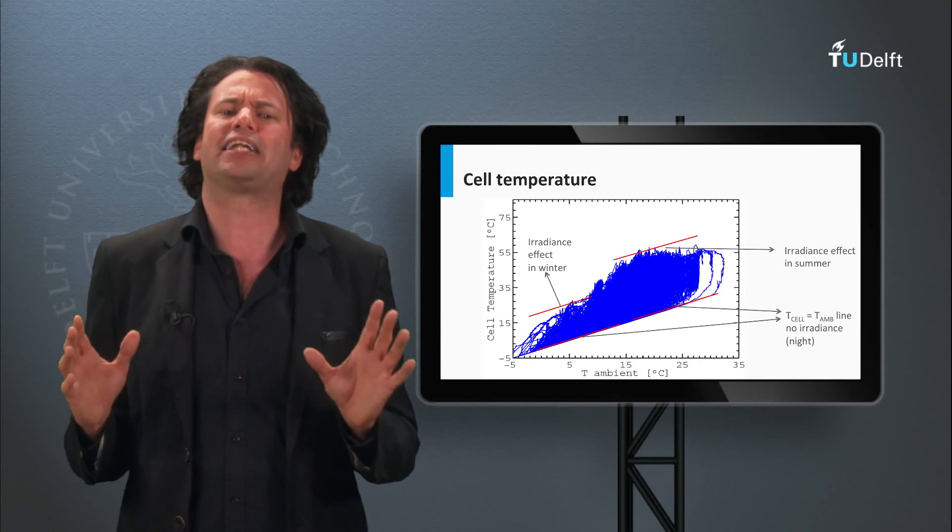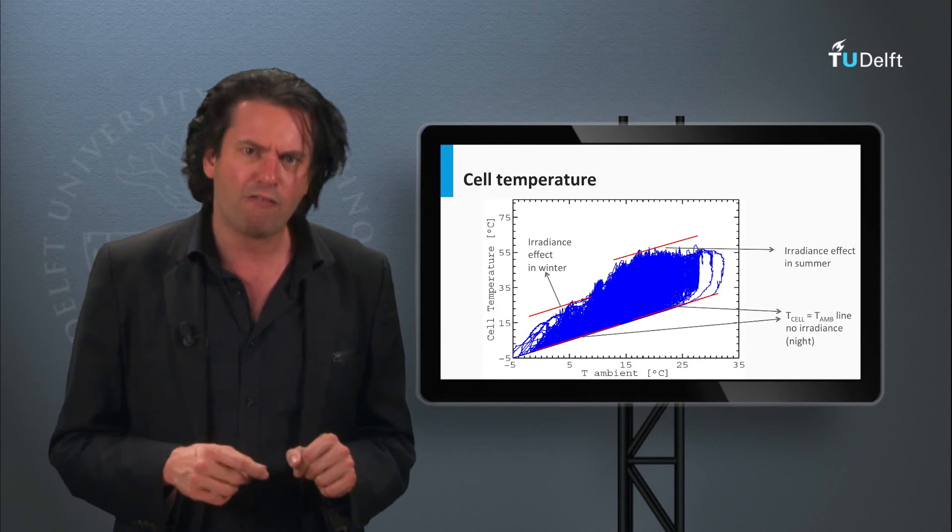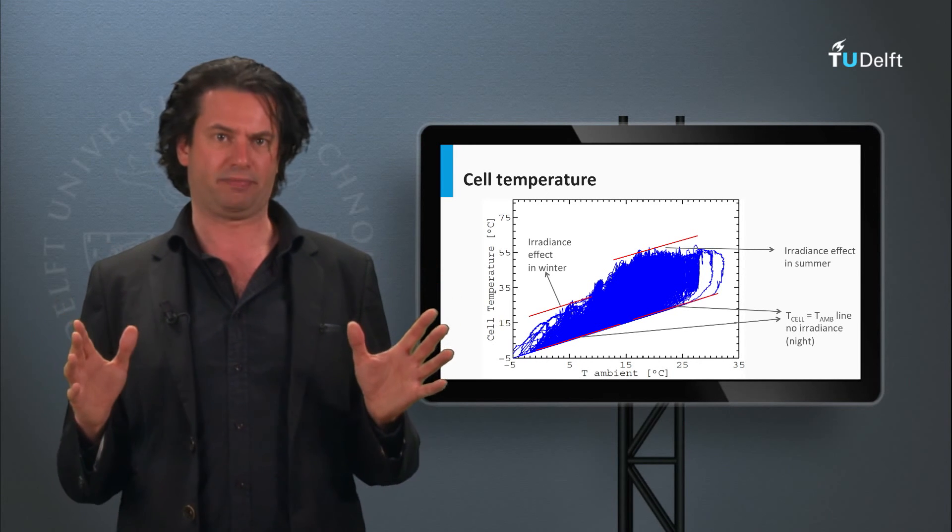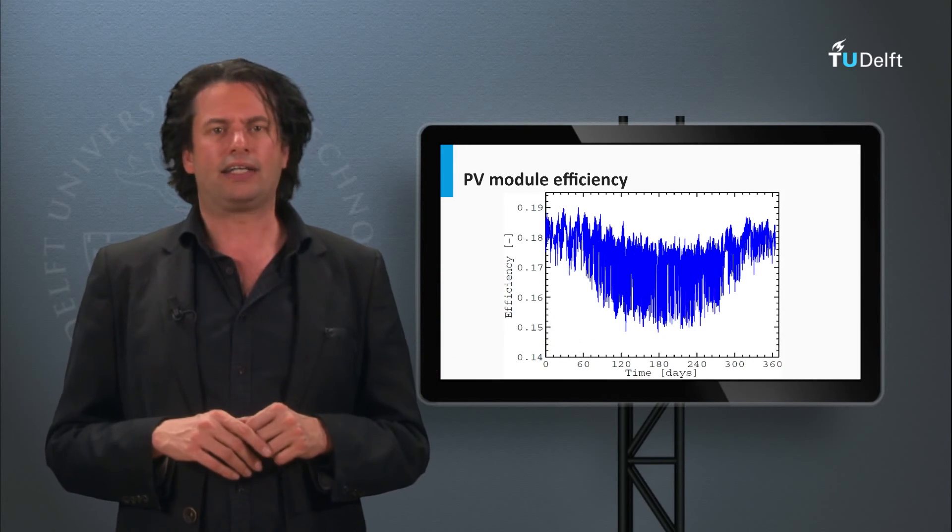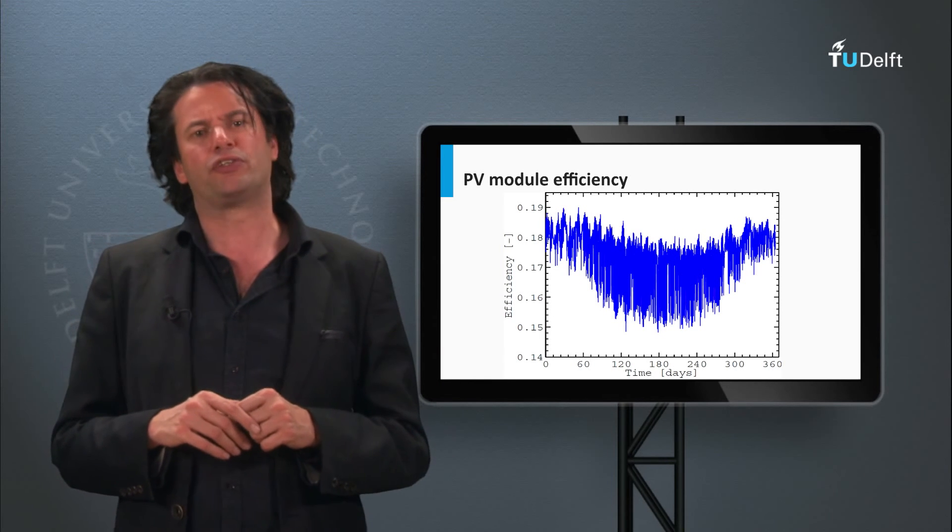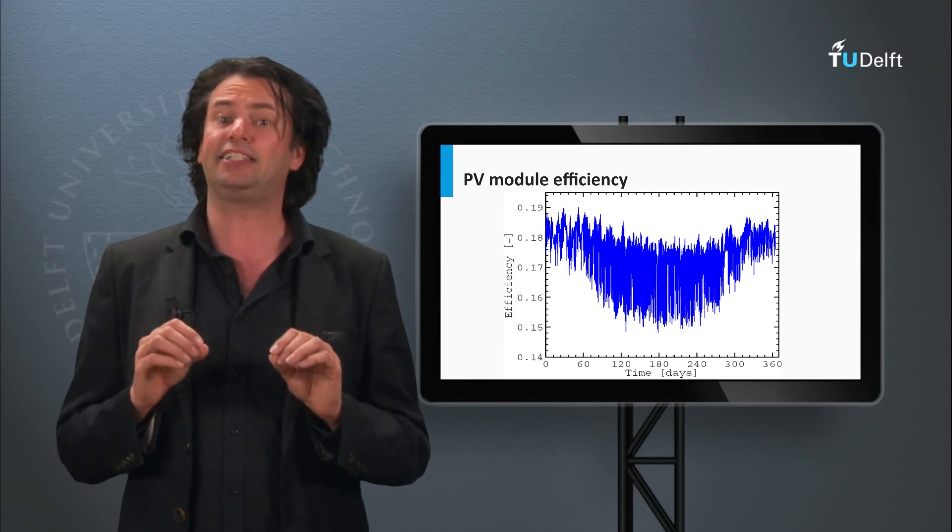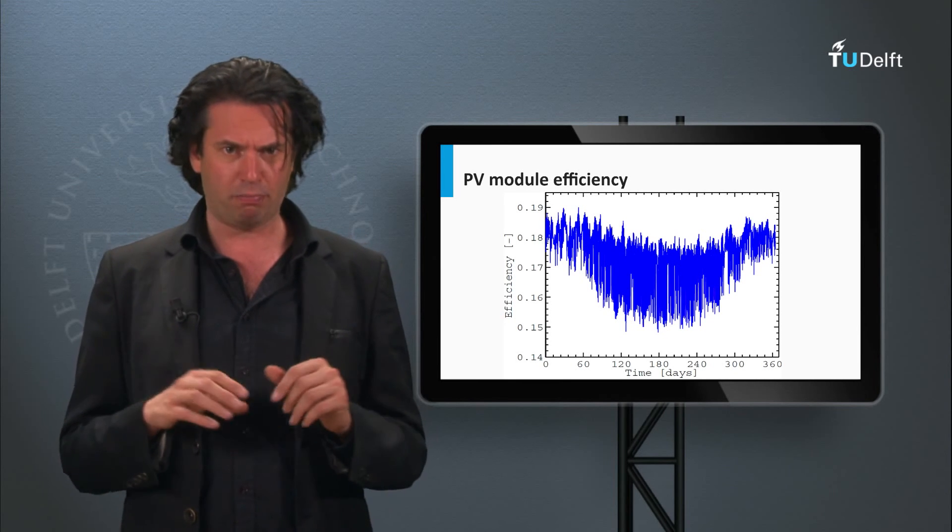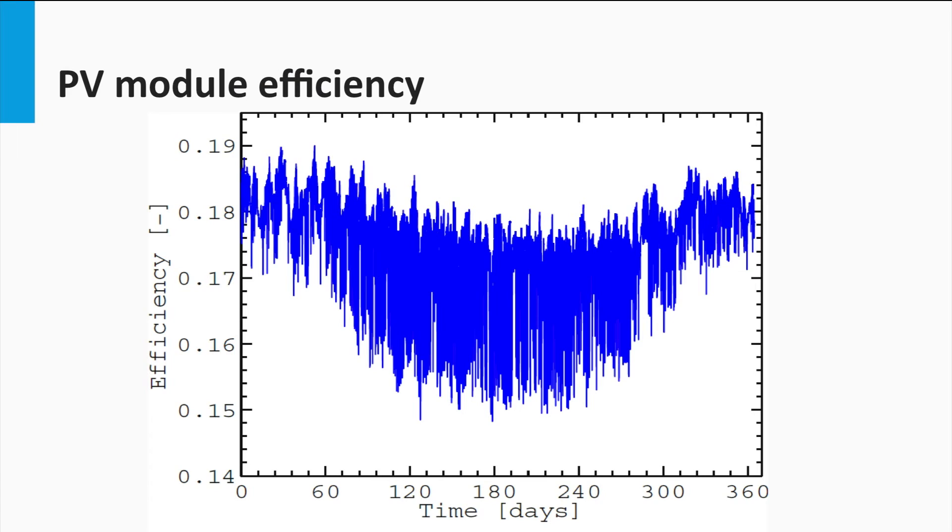So how serious can this temperature effect be for our PV module's output over the calendar year? At the PVMD group of the Delft University of Technology, we have done an extensive study on the temperature effects on the PV module's output. In this graph you can see the efficiency of a PV module over a calendar year as modeled using actual temperature and irradiance data for the Netherlands in 2012. It can be clearly seen how the efficiency is not constant but changing with the ambient conditions over the year.